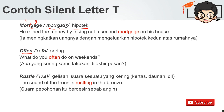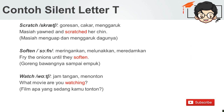Lalu T setelah S: 'rustle' — gelisah, suara sesuatu yang kering seperti kertas atau daunan. The sound of the trees is rustling in the breeze. Suara pepohonan itu berdesir sebab angin. Kata lain: 'scratch' — goresan, cakar, atau menggaruk. Masiyah yawned and scratched her chin. Masiyah menguap dan menggaruk dagunya. Lalu 'soften' — meringankan, melunakkan, dan meredamkan. Fry the onions until they soften. Goreng bawangnya sampai empuk.